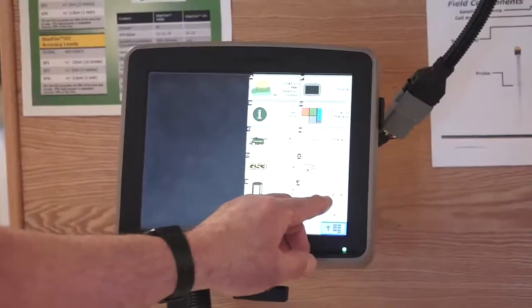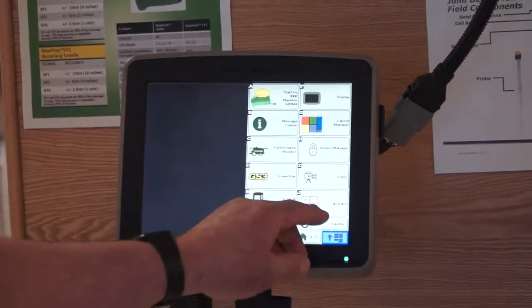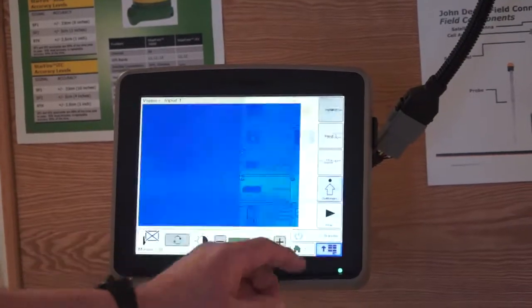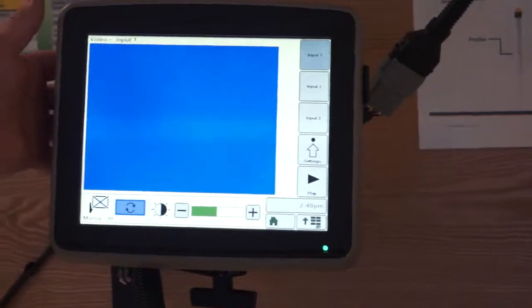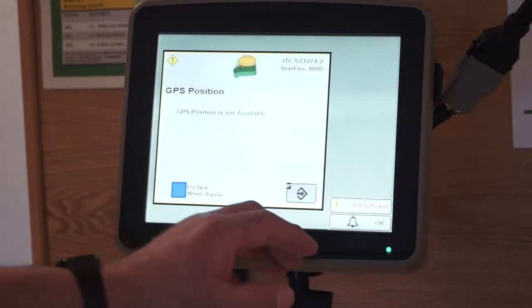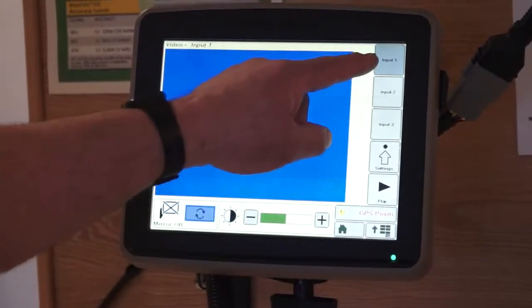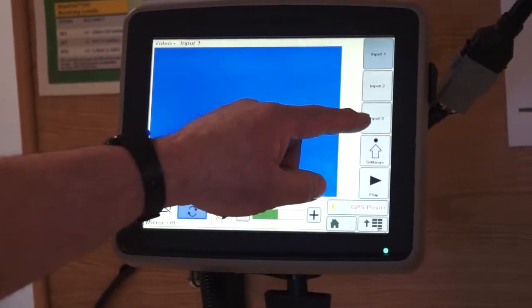Next tab up is self-explanatory as a calculator. Next tab up is your video. This display is capable of handling up to three video inputs from three different cameras, and you can manage all three through video input one, two, and three.